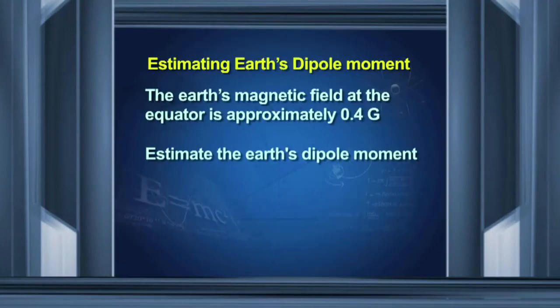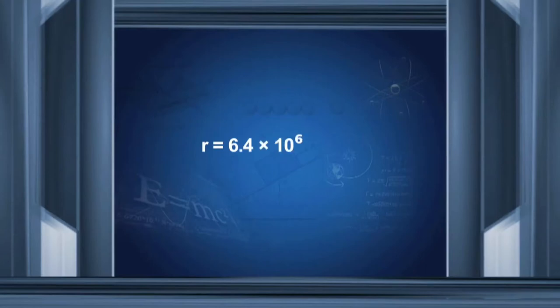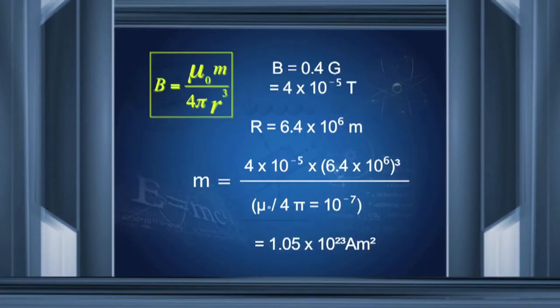The Earth's internal magnetic field generates two poles, so it behaves as a dipole. Can we estimate the value of its magnetic moment? Yes — by using our expressions for magnetic dipoles or current-carrying loops. At the equator, the magnetic field is 0.4 Gauss and the radius of the Earth is 6.4 × 10⁶ metres. Using the expression μ₀m / 4πr³, we get m equal to 1.05 × 10²³ ampere metre squared. This is consistent with the experimentally determined value of approximately 8 × 10²² ampere metre squared.